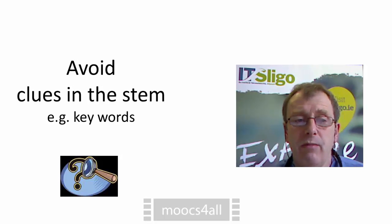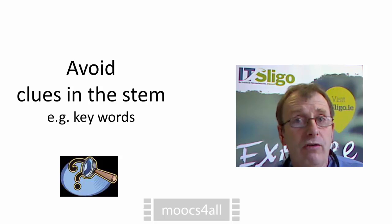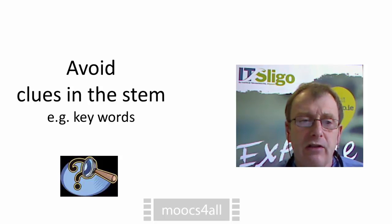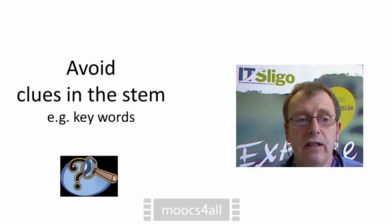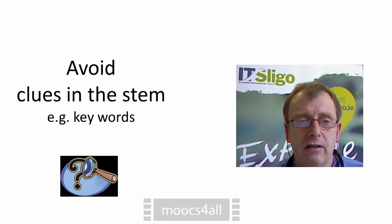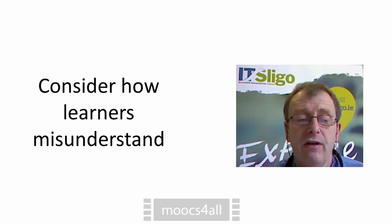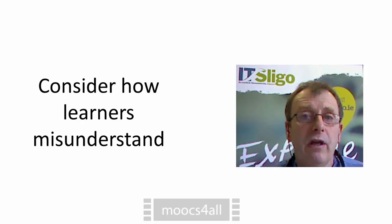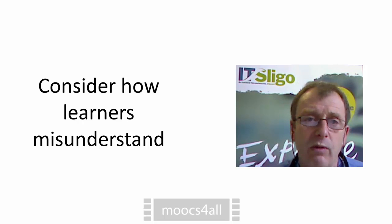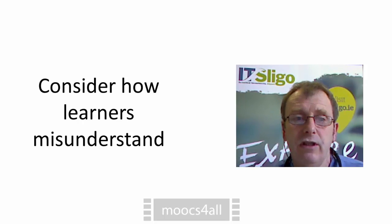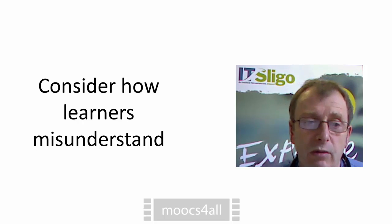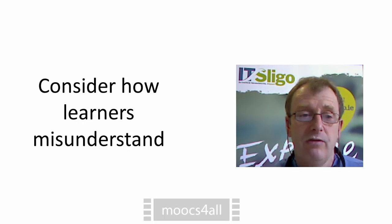Avoid clues in the stem. Often a word appears in the stem and also in the correct answer, or another version of that word appears, giving students a clue to the correct answer. Make sure you don't have any clues in the stem. Also consider how learners misunderstand the material. From your teaching experience, base some questions on typical mistakes learners make — this will improve your teaching as well, as those mistakes may disappear.